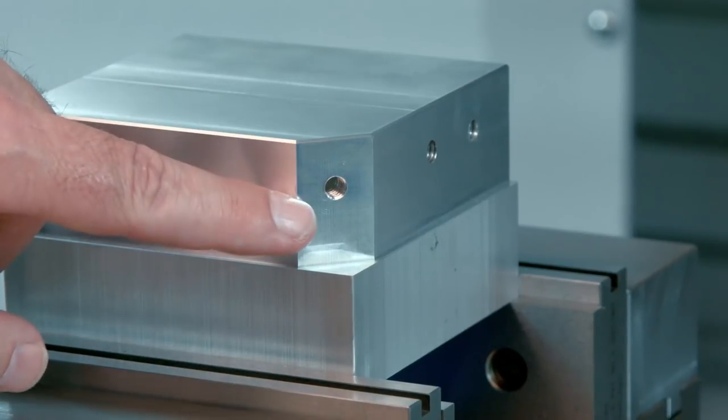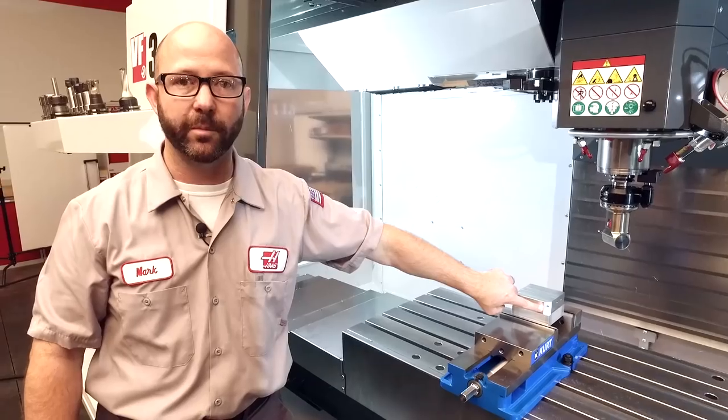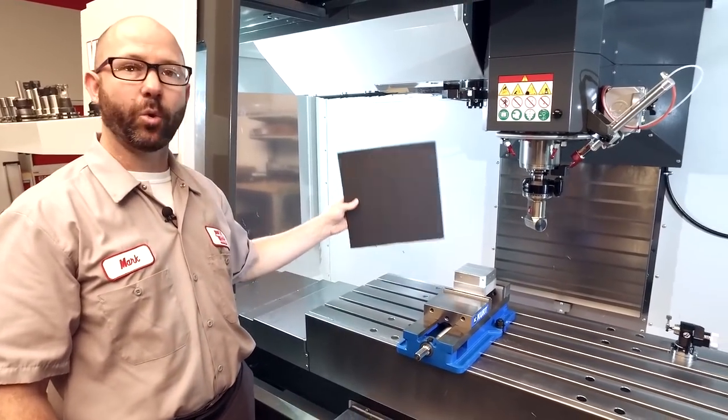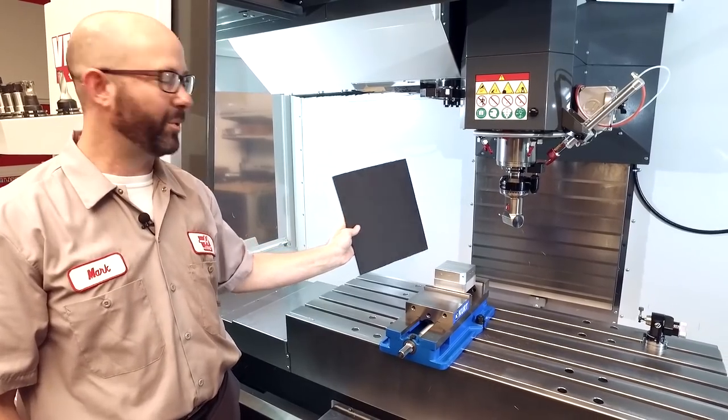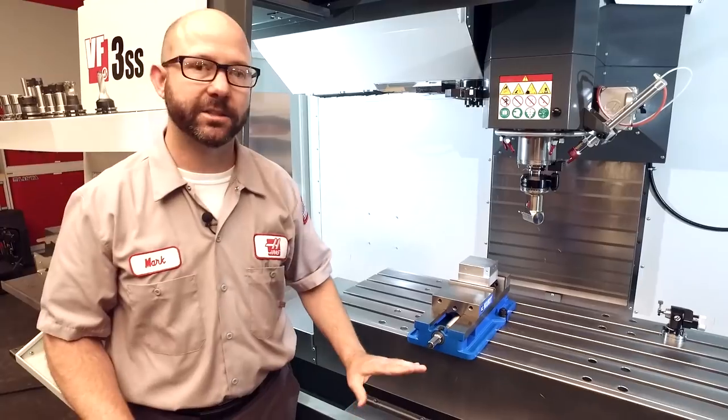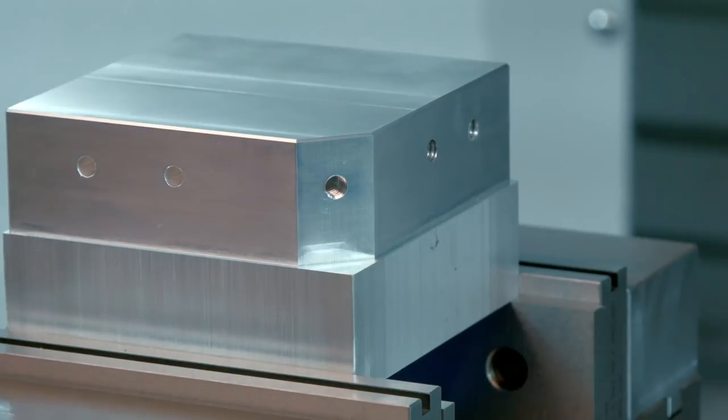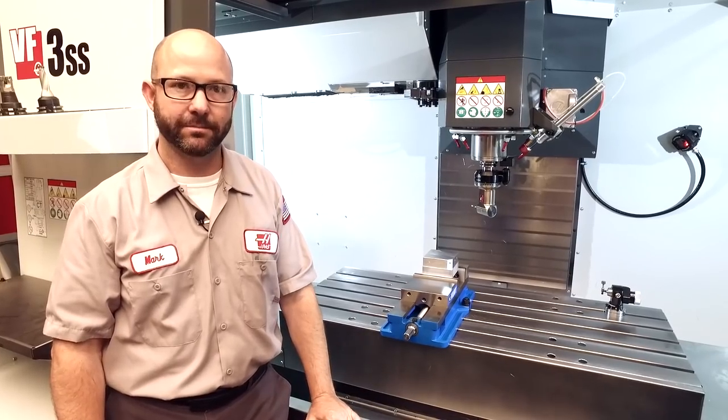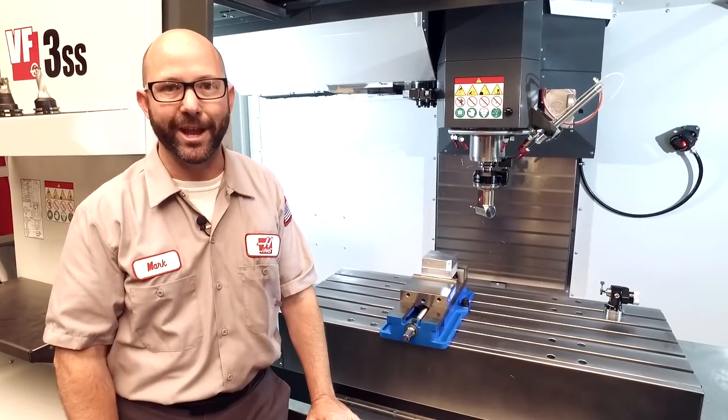What about this surface here? This 45 degree angle on the front of my part? Is that a G17, a G18 or a G19 plane? Well, it's none of the above. We're not going to use typical can cycles to drill and tap this hole. In this case, we're going to program this hole point to point. Let's take a look at the white board and we'll show you how.